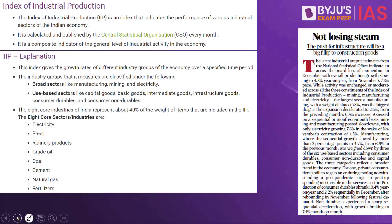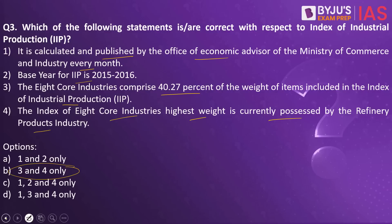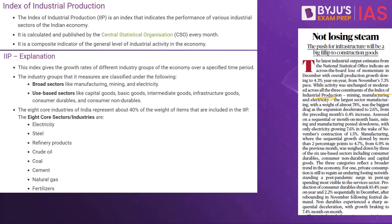Why have we taken this practice question? Because this article in the Hindu makes a reference to the Index of Industrial Production. The first statement says it is calculated and published by the Office of Economic Advisor — this is wrong. It is calculated and published by the Central Statistical Organization.